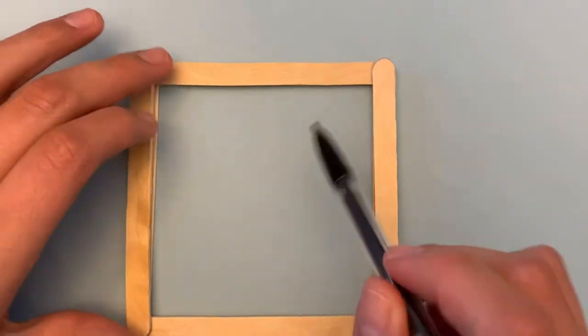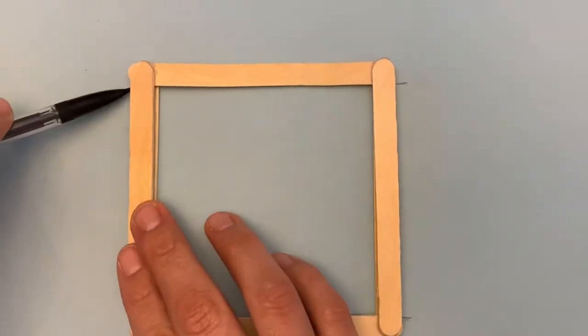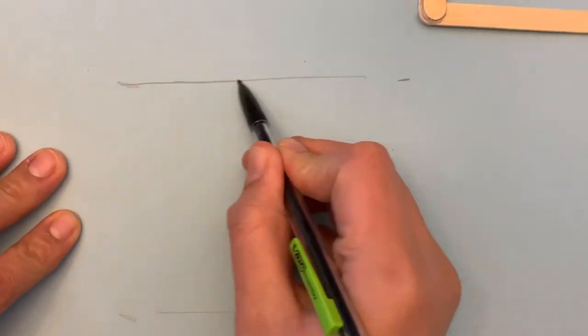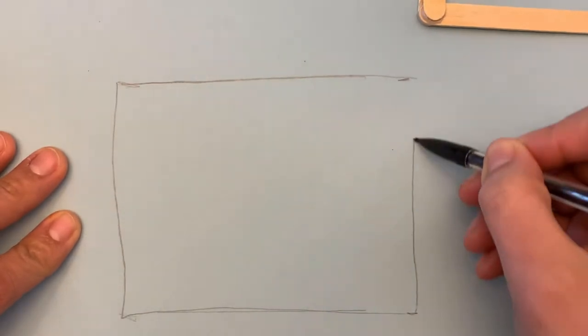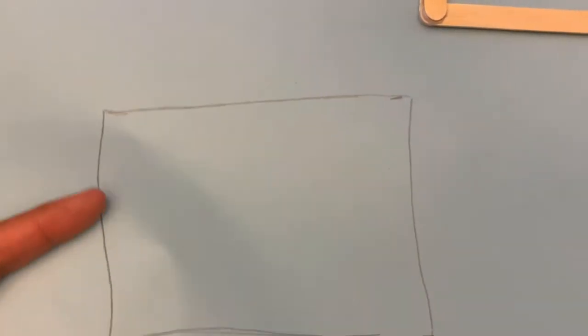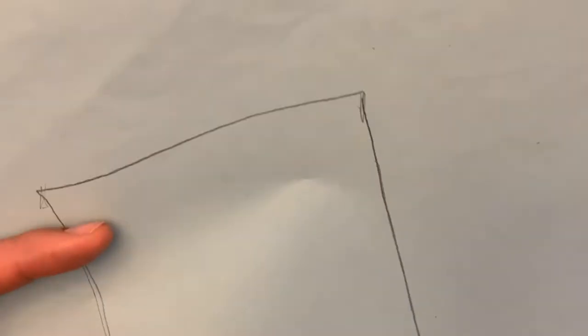This is just me kind of drawing the same shape, just a little bit longer as you can see. I'm just going to draw a longer rectangle. Now all we're going to do is cut this out and glue our pieces to it, and then we should be able to take in and out our little paintings as we want.